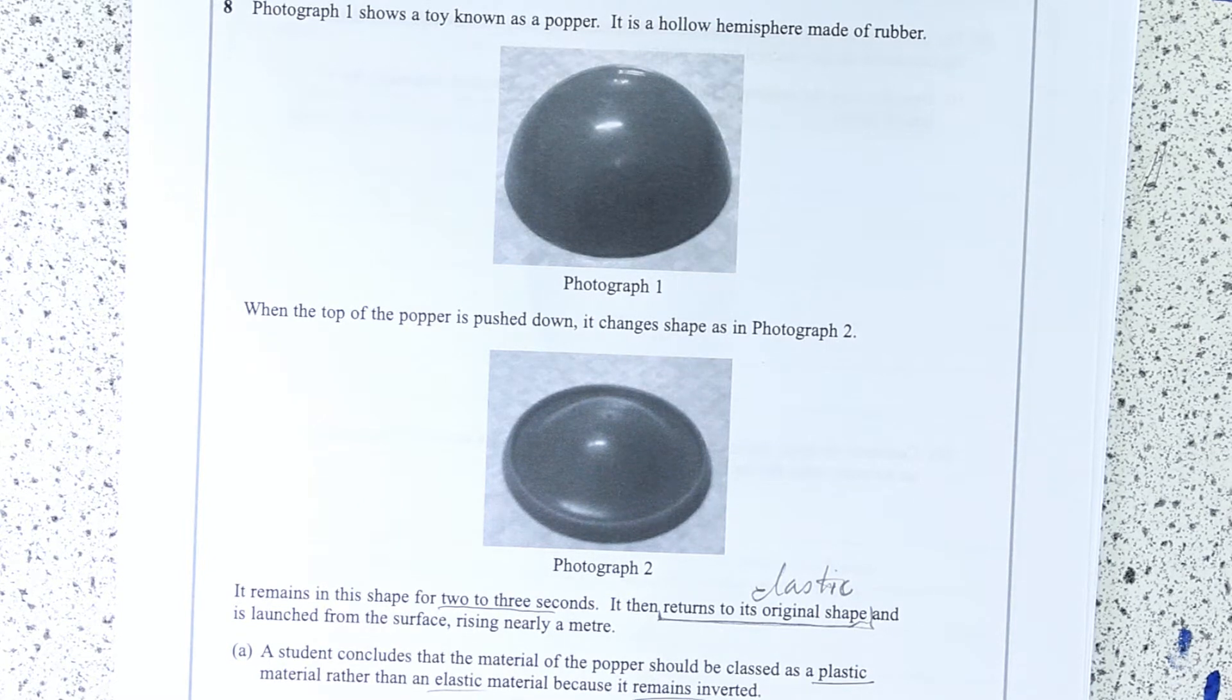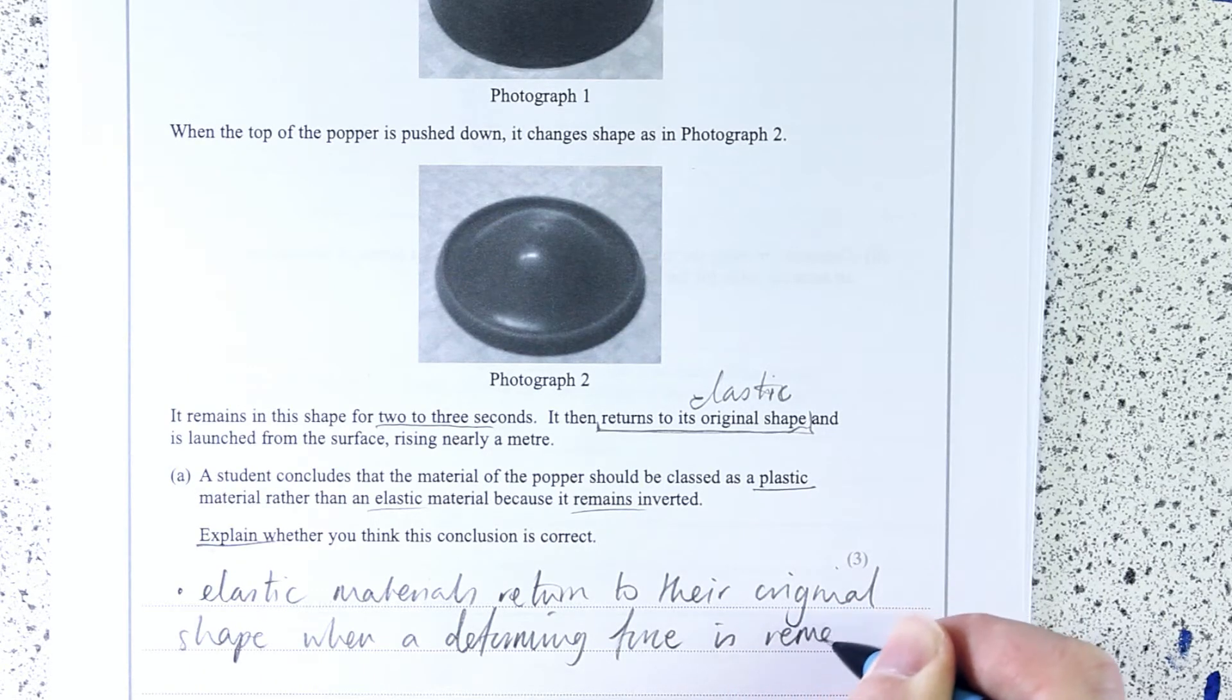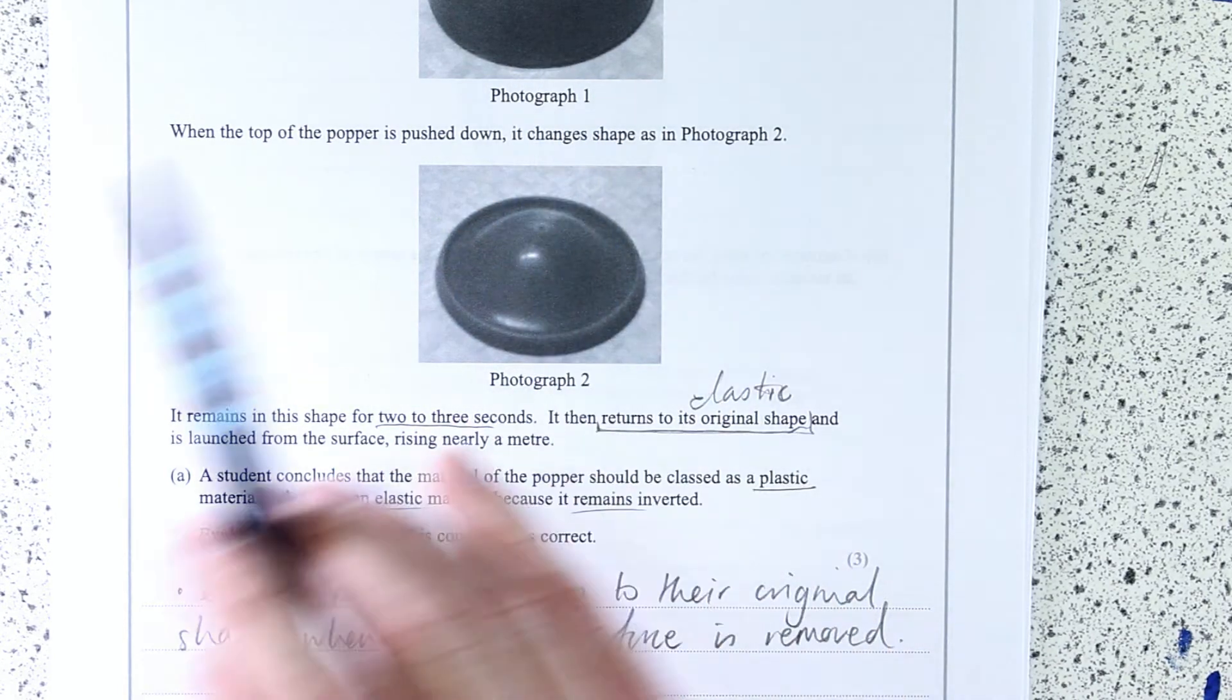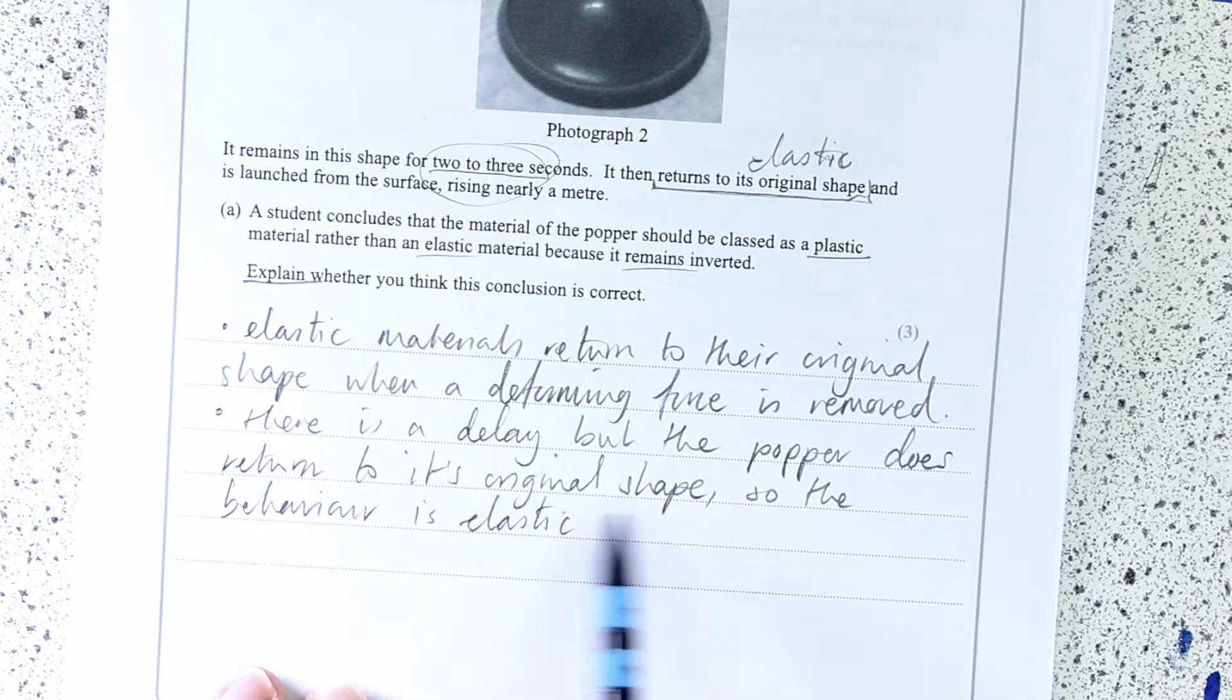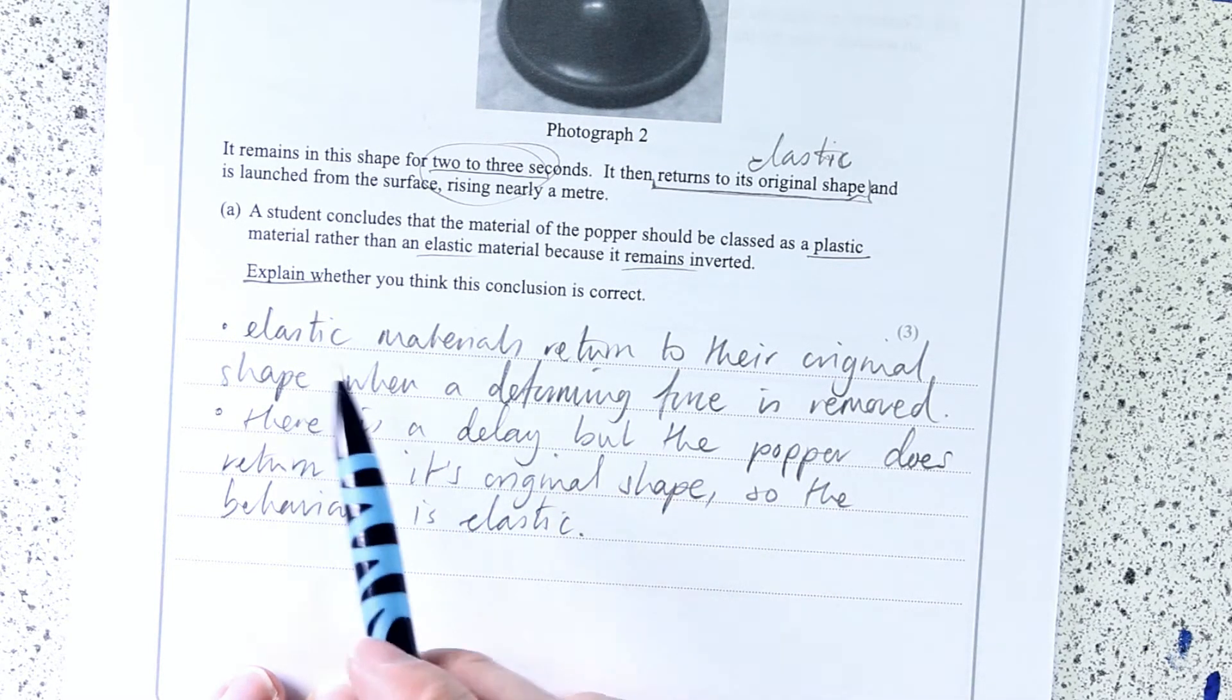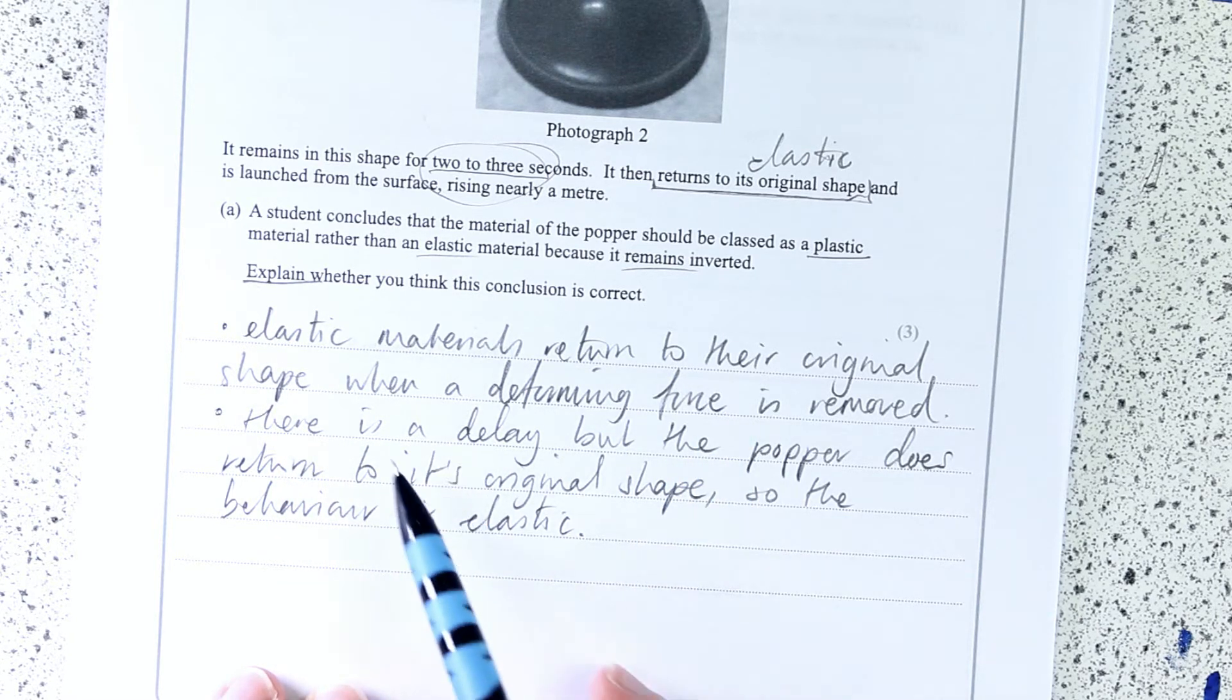Well, it's not correct, is it? Because it does in fact return to its original shape when the deforming force is removed. Now that is clearly what has happened. You've pressed it in, deforming force is gone. It takes a little bit of time, but the popper does return to its original shape, so the behaviour is elastic. So the first mark is really just define what elastic is and then apply that to here.